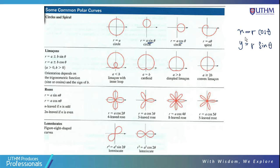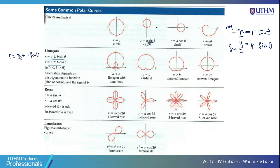For the limaçon curve, the pattern is R = A ± B sinθ (or cosθ). For example, R = 3 + 2 sinθ, where A=3 and B=2. Since A is greater than B, it produces a limaçon with an inner loop. The orientation depends on whether cosine or sine is used and its sign.